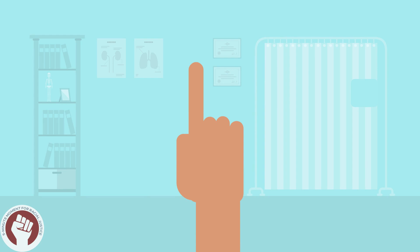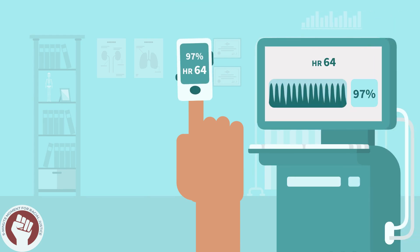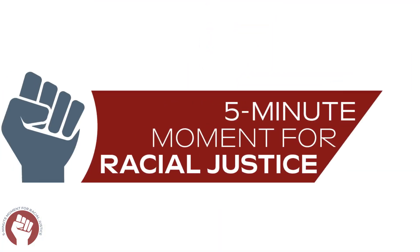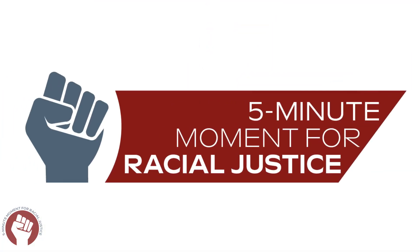This video covers how the pulse oximeter, a commonly used medical device, can contribute to racial health disparities, as guided by the 5-Minute Moment for Racial Justice teaching framework.